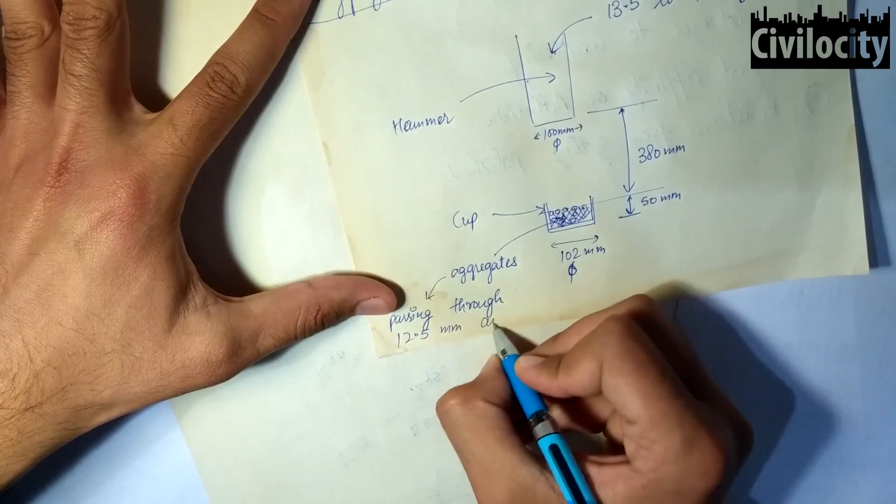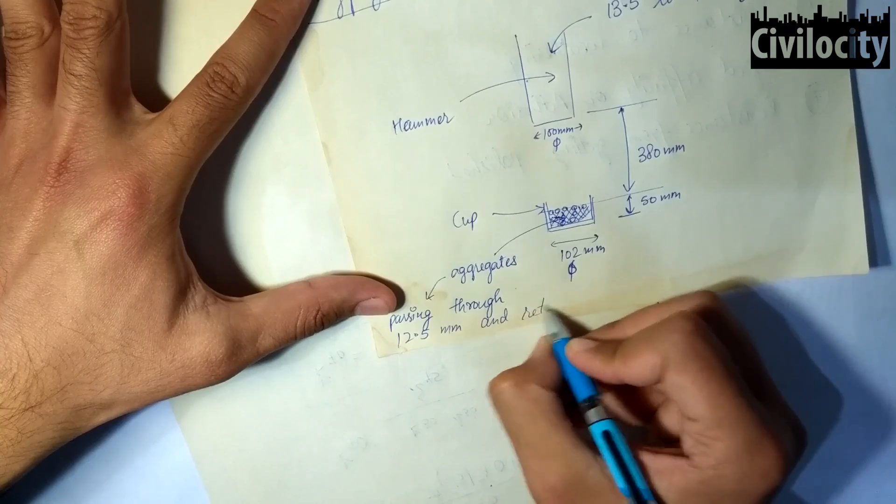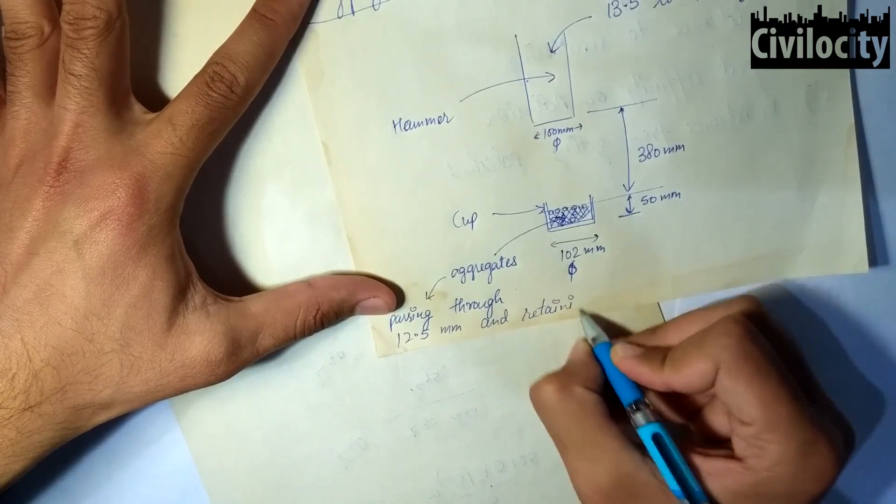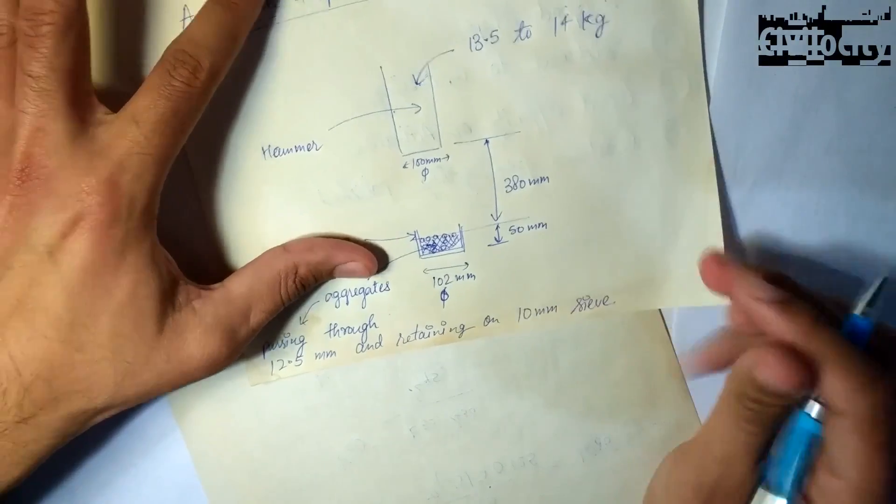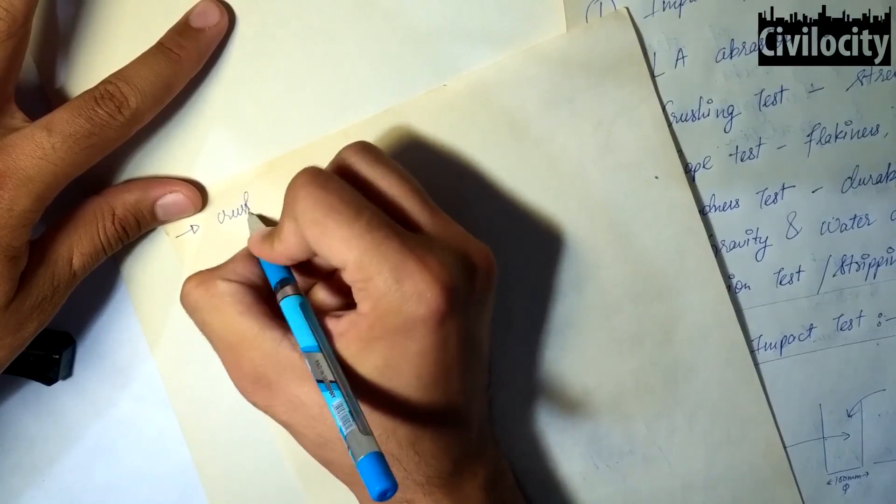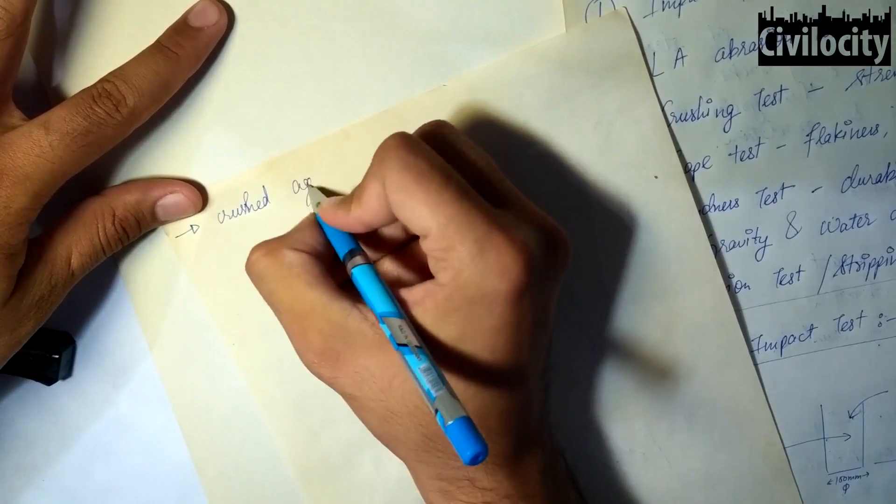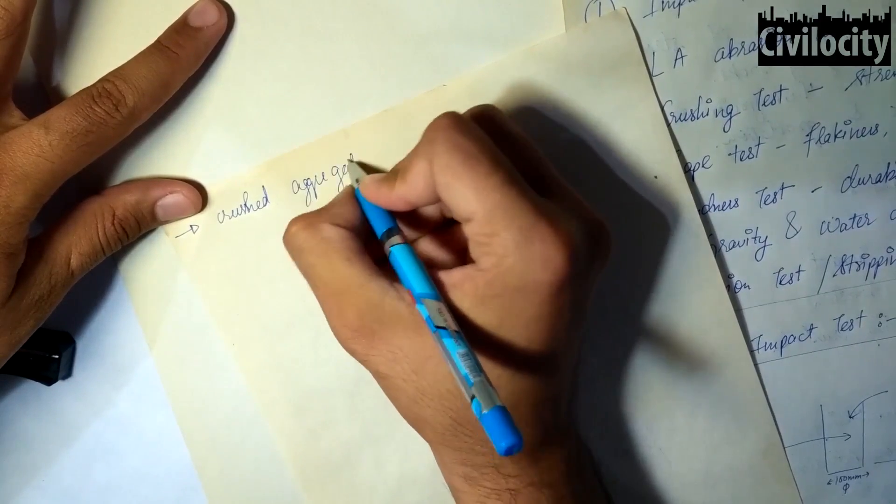The aggregates that are used for the specimen are those which are passing from 12.5 mm sieve and retained on 10 mm sieve. These aggregates are filled into the cup in three layers and each layer is tamped by 25 blows with a tamping rod.